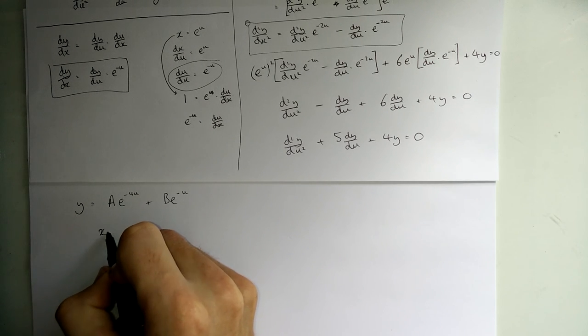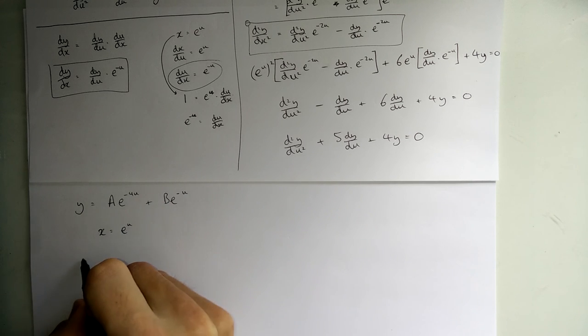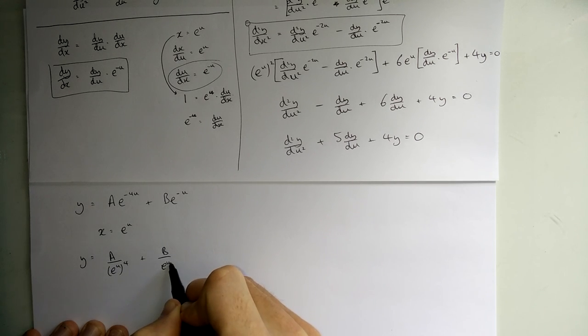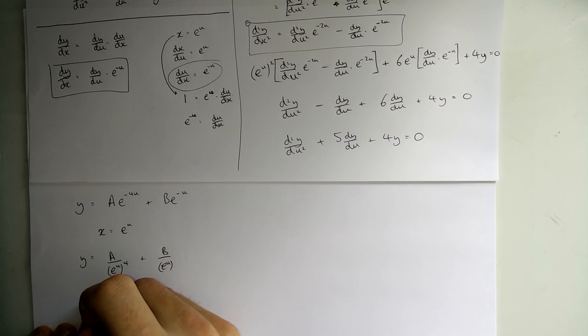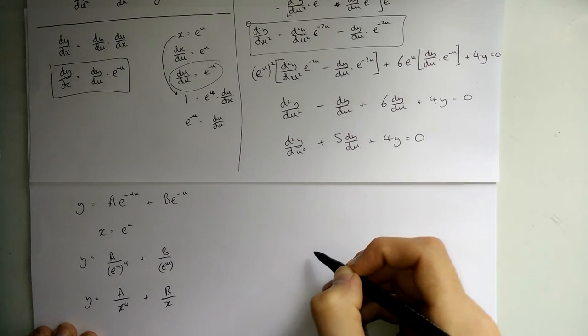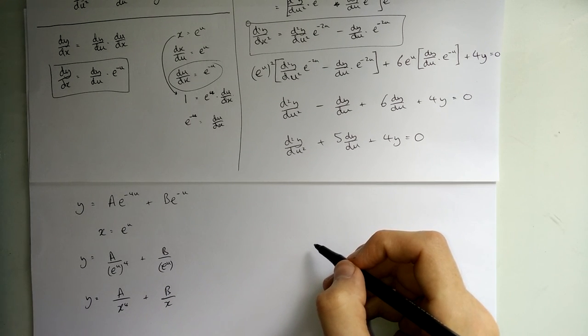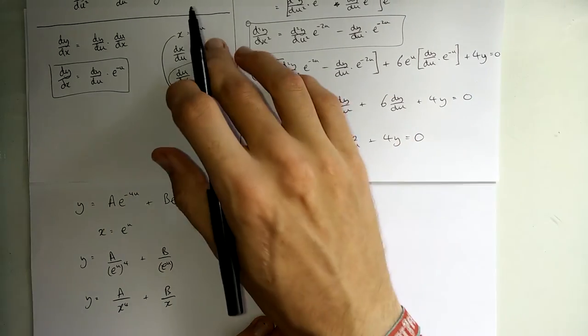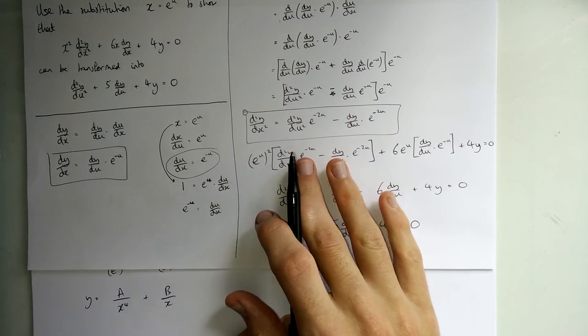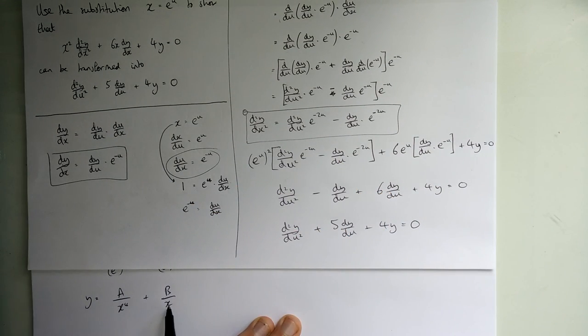The problem here is that we've got u's and not x's. That's okay because we always said that x was equal to e to the u. So we could rewrite this as being y is equal to a over e to the u to the power of 4 plus b over e to the u, and then replace those e to the u's with x's. And that gives you a solution for that original horrible differential equation that is just up here off the screen. Let me just slide down a second. Yeah, so we've now solved this one and given us a general solution to that differential equation. Good luck with this.